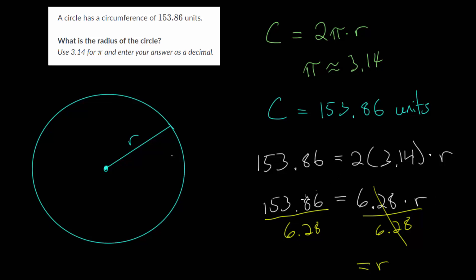When we use a calculator, this quotient, 153.86 divided by 6.28, equals 24.5. So this is our radius. And again, this is in units since we're being very general here.